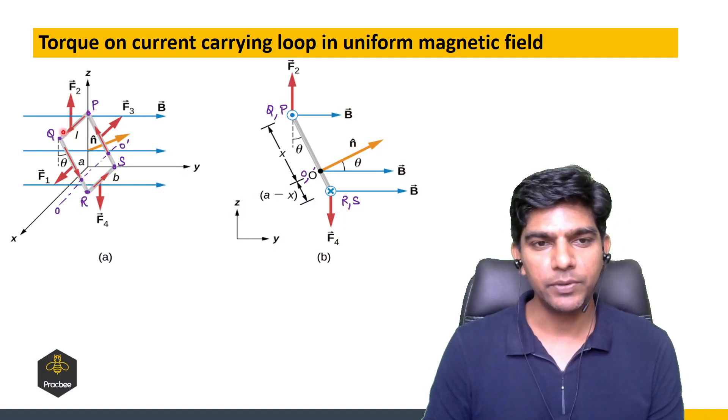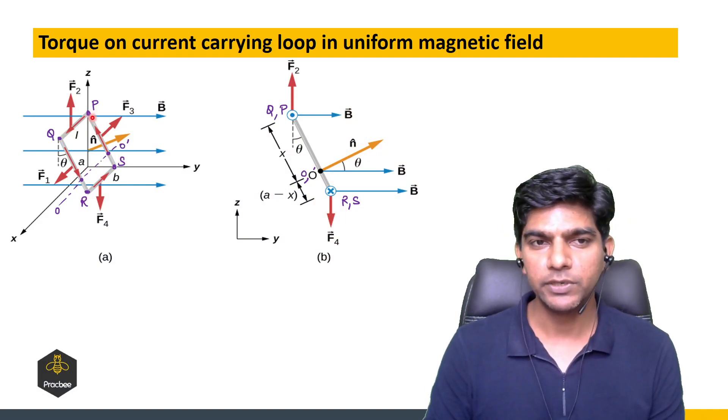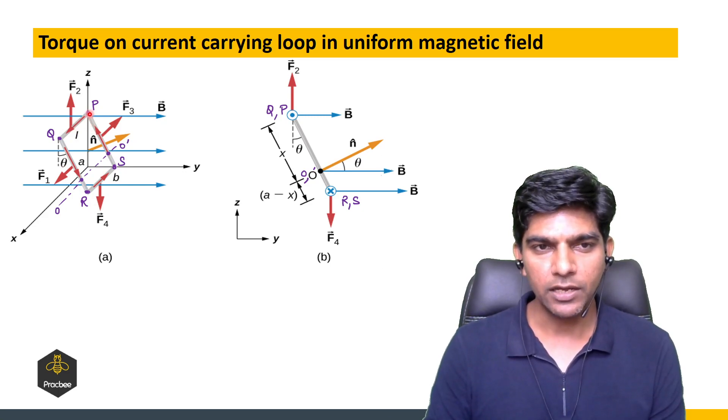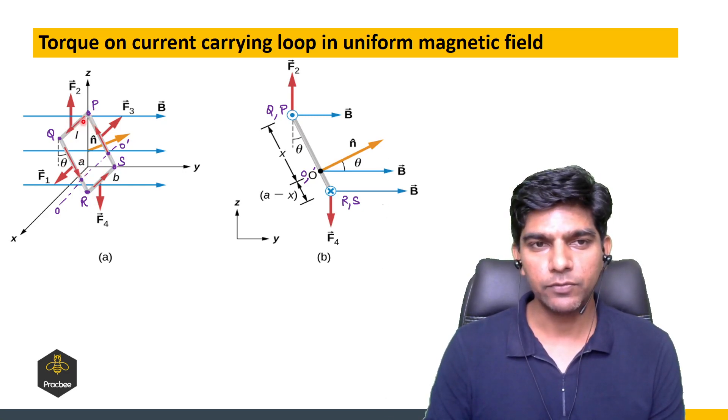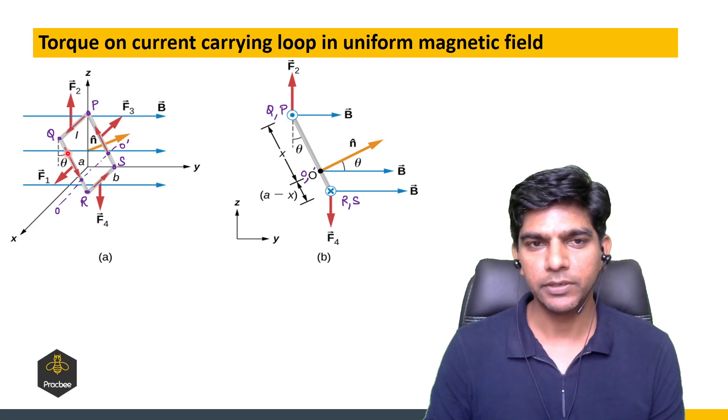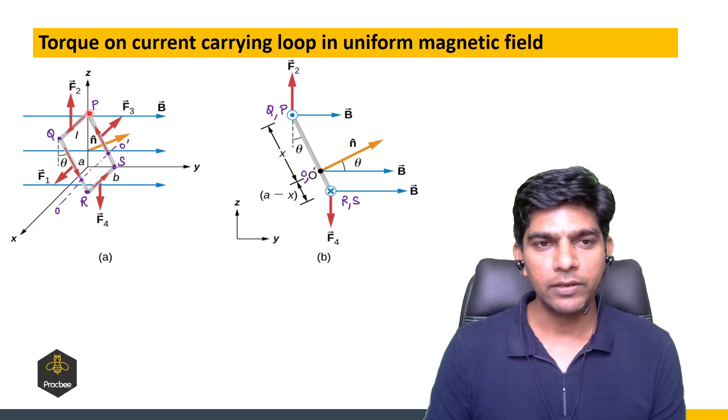We have a loop given PQRS and the current is also P to Q, right, so the current is I. Here is a rectangular loop and PQ length is B and the length of RQ is A, right.